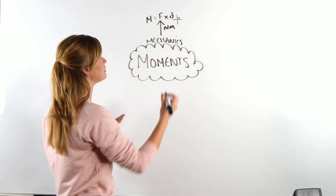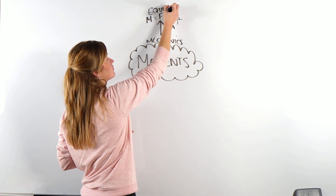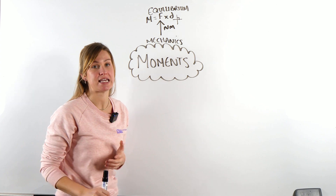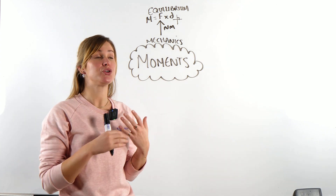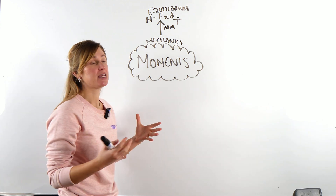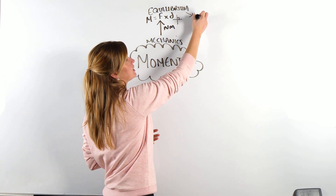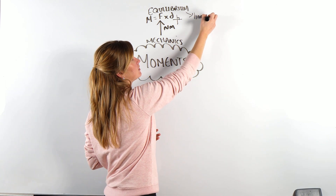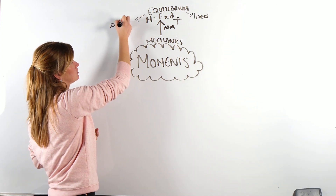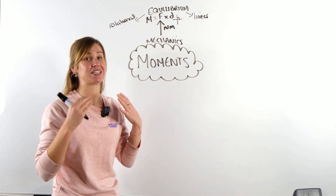When we do moments questions, you're always thinking about things being in equilibrium. A common exam question is to state two factors — two points for why a system is in equilibrium. The two things it has to obey are linear equilibrium and rotational equilibrium.